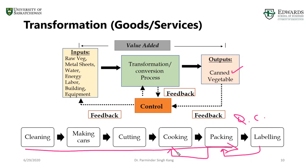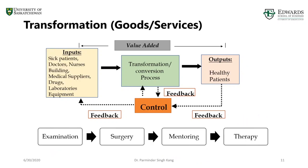Here's an example of a hospital where we look at the transformation process by treating patients. They go through surgery, then are in a monitoring unit, then have full surgery therapy, and so on. The output is healthy patients. The essence of the transformation process remains the same — you use the feedback mechanism to collect data from customers and from various activities, and control these activities in order to enhance future operations.